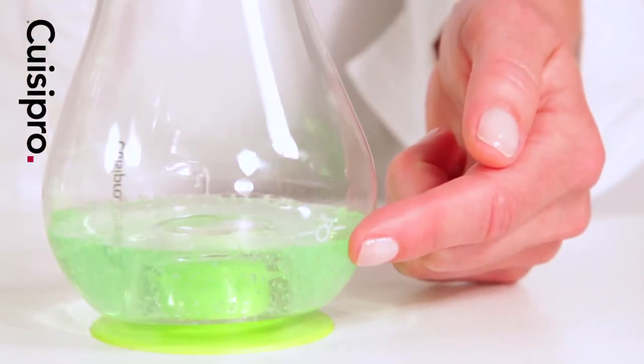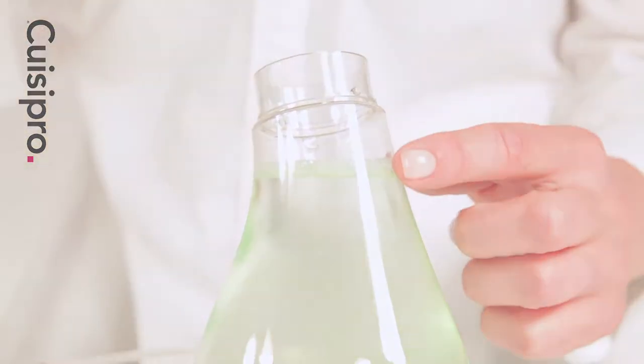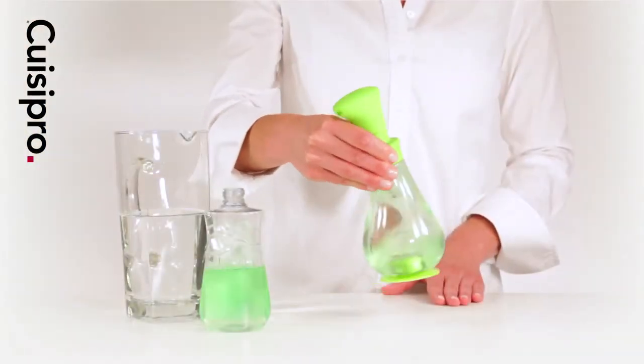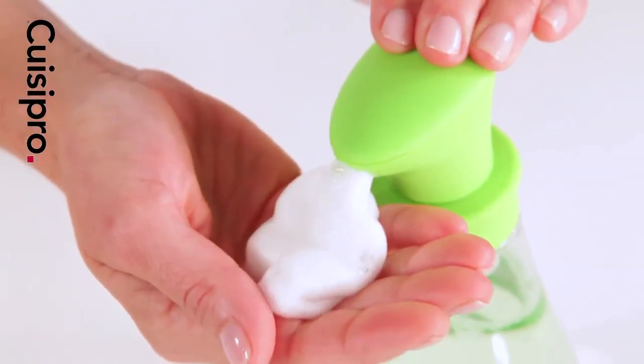Pour soap to the first fill line, then add water to the second fill line. Swirl the pump to mix the soap and water, then press the valve several times to dispense foam.